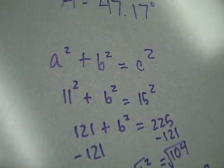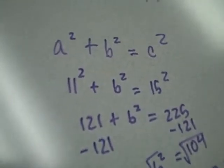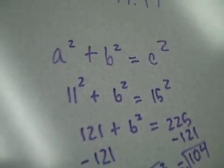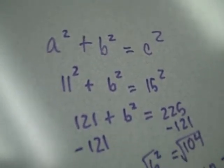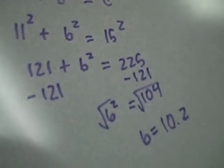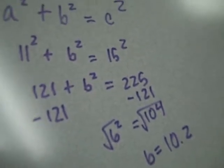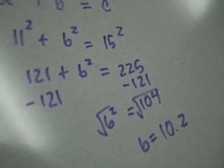Then we used the Pythagorean theorem to find side B. We did a squared plus b squared equals c squared. Side A is 11 and side C is 15, so 11 squared plus b squared equals 15 squared. We found 11 squared to be 121, and that plus b squared equals 225.